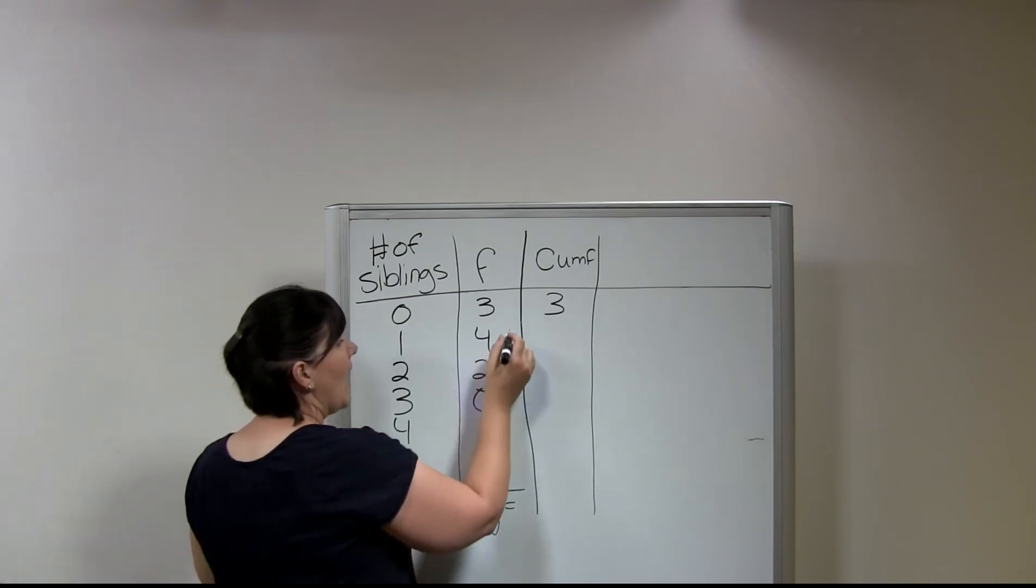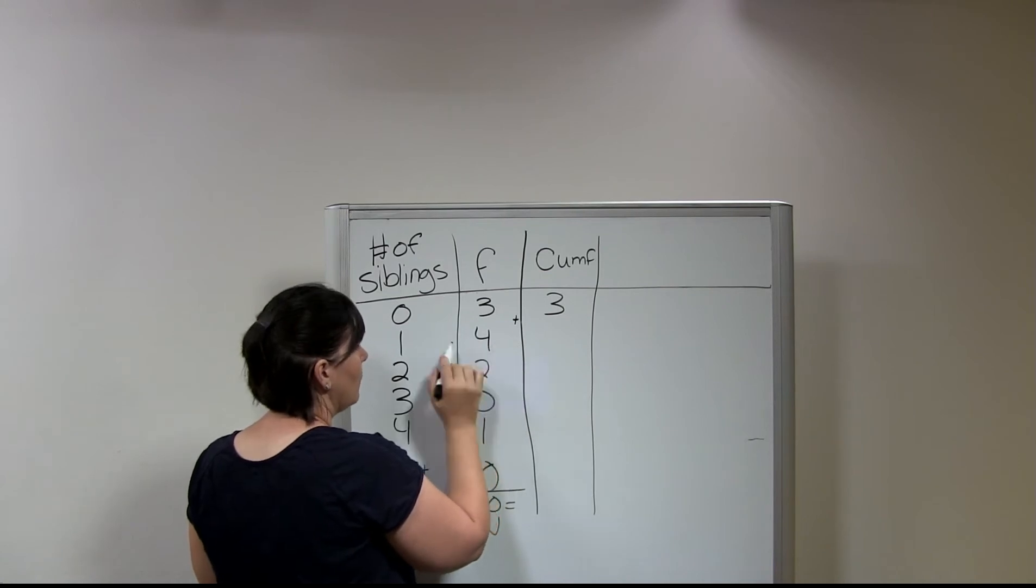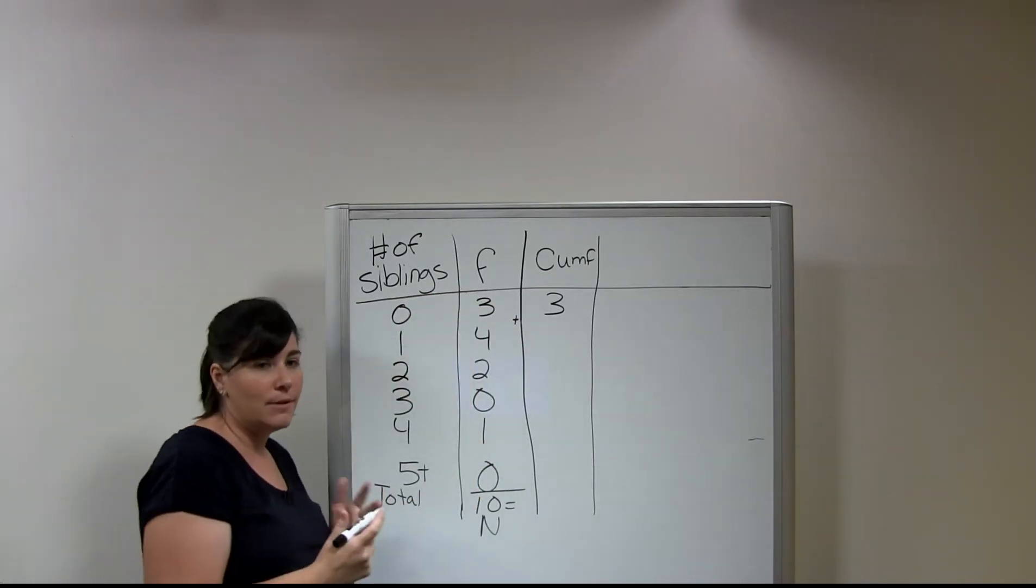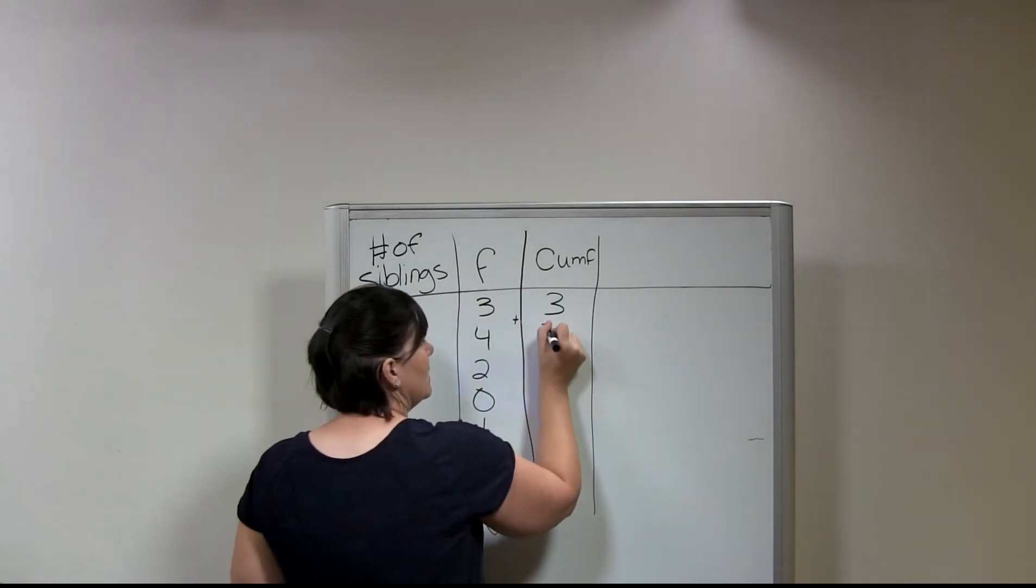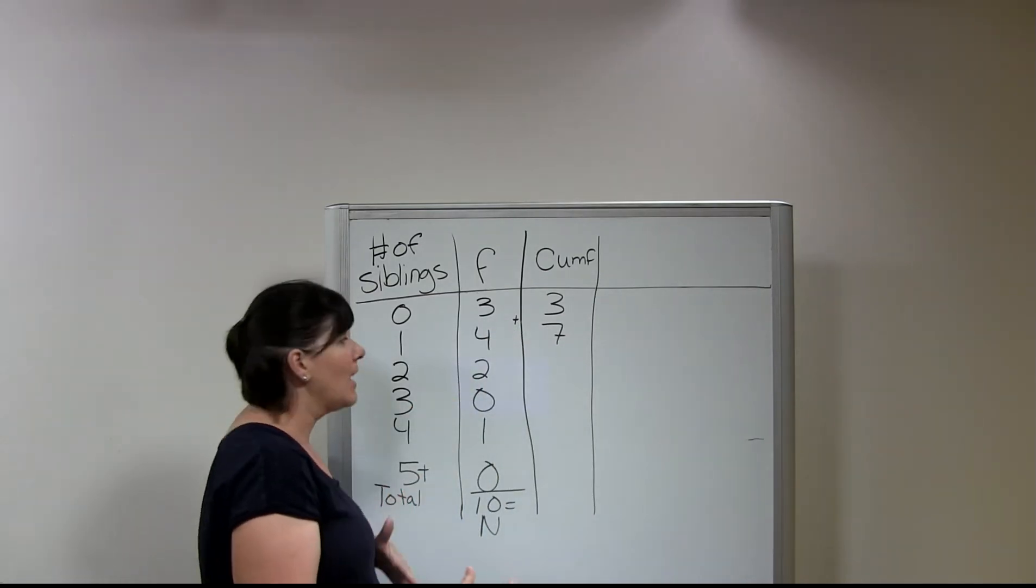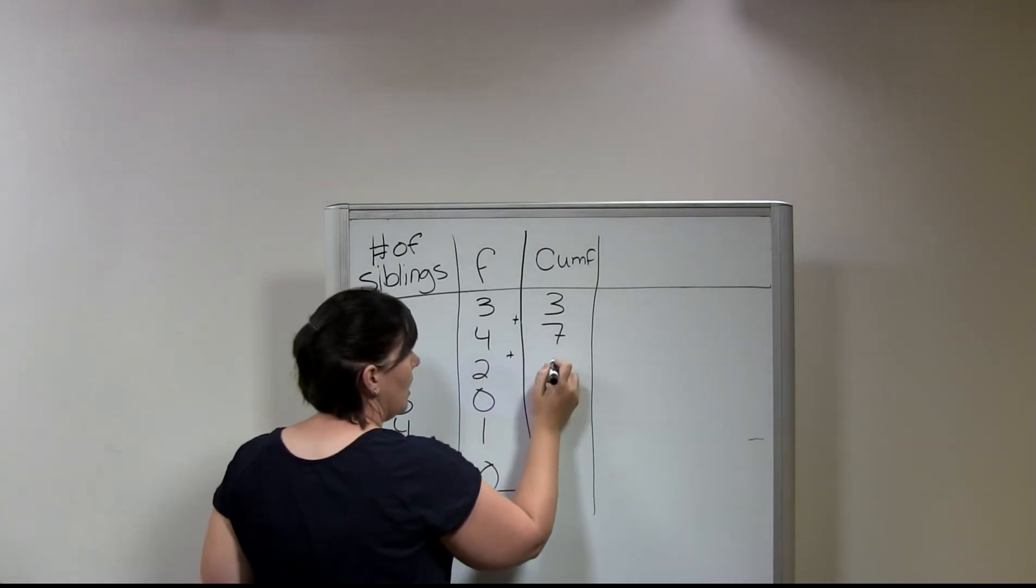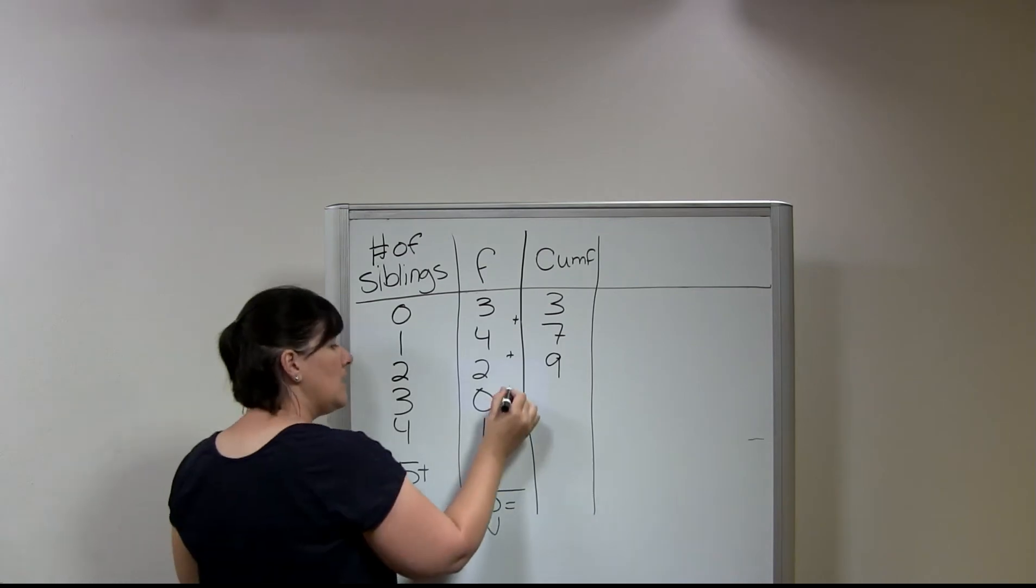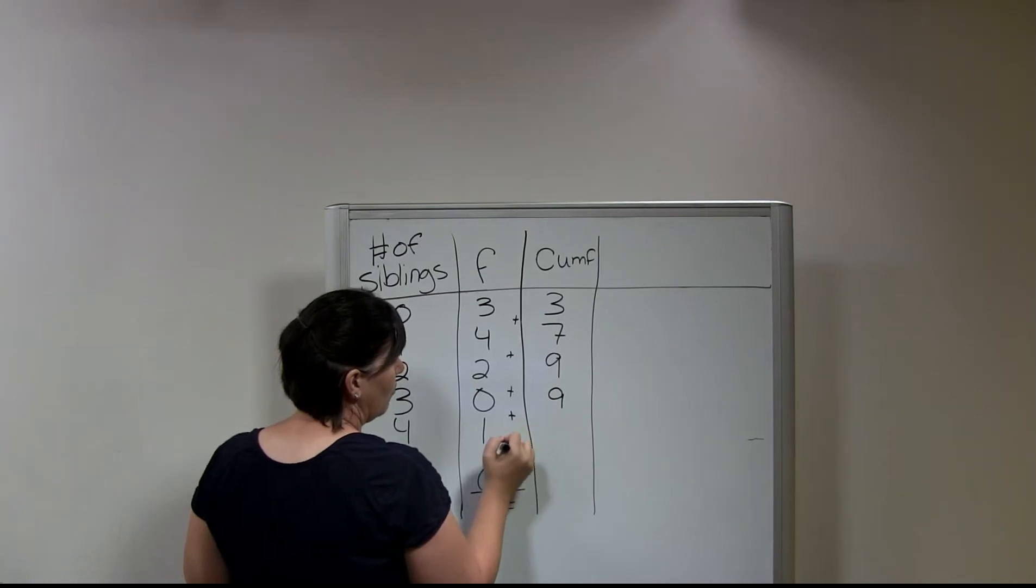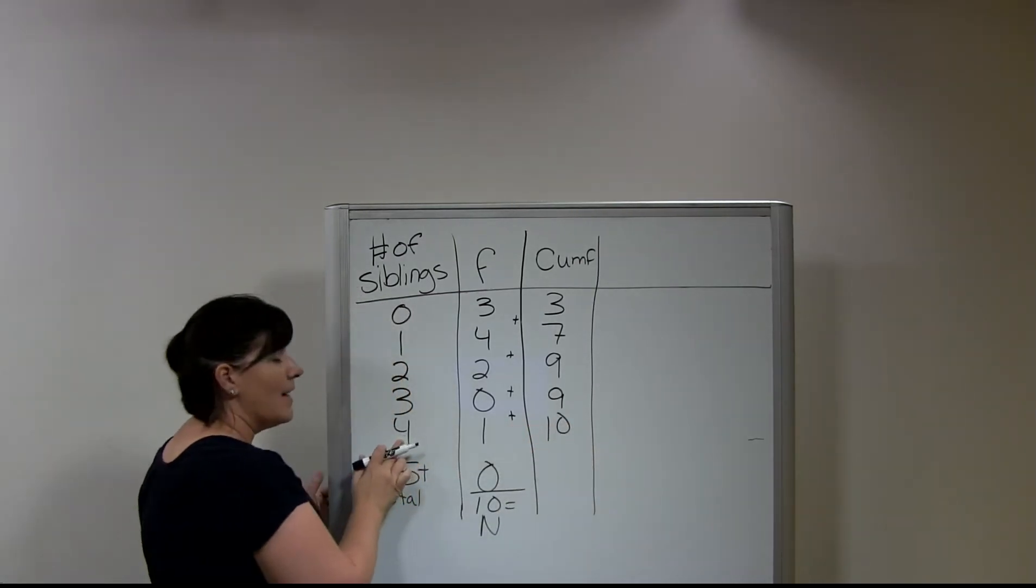For the second category, I'm going to add my frequency for the second category. So for people who have one sibling, I'm going to add that to the frequency of those who have zero siblings. So that's going to give me seven, because three plus four is seven. So then, for the next category, I'm simply going to add again. And so I'm going to add two to seven, and that's going to give me nine. So I'm going to add again, and zero plus nine is nine. And then I add my one, and I get ten for the category of four.